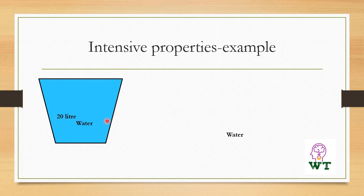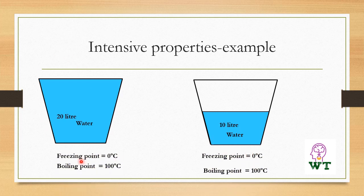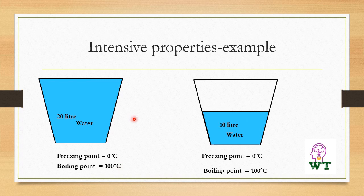Consider water present in a beaker — 20 litres of water in one beaker and 10 litres of water in another beaker. Whatever the amount of water present, their freezing point and boiling point are the same for any volume. That means the freezing point will be 0 degrees centigrade and the boiling point will be 100 degrees centigrade for any volume of water.